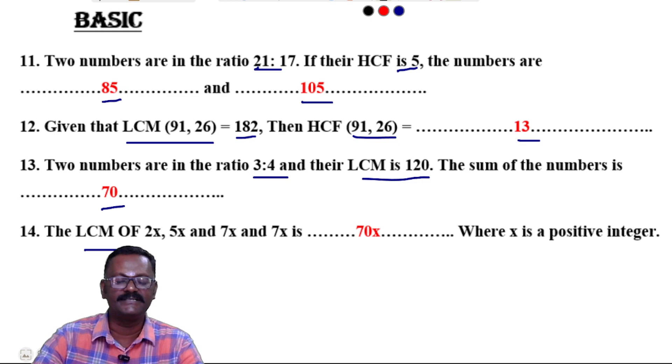Question 14: The LCM of 2x, 5x, and 7x is 70x, where x is a positive integer.